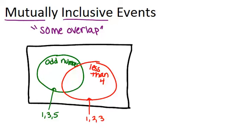If we look at this, we see that there's some overlap. Both 1 and 3 occur in both events. That's why these two circles in our Venn diagram overlap, because there is some overlap. 1 and 3 happen in both events.